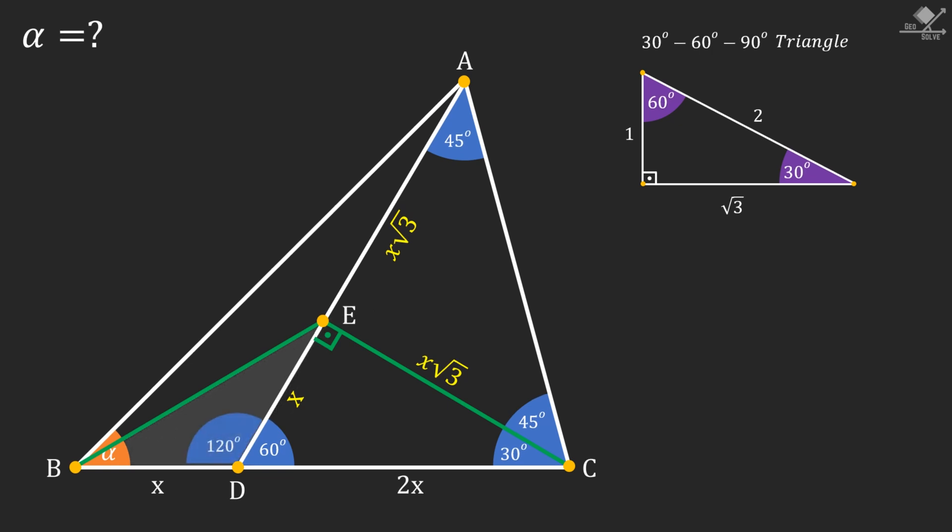Also we know that this angle is 120 degrees. Since this is an isosceles triangle, base angles should be equal and they are 30 degrees each.